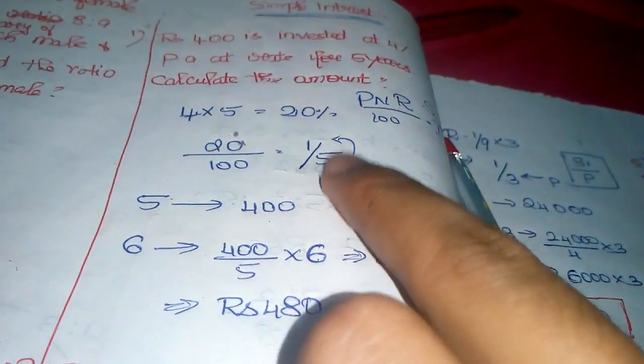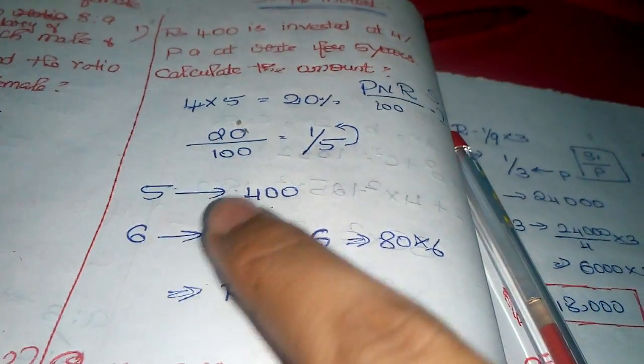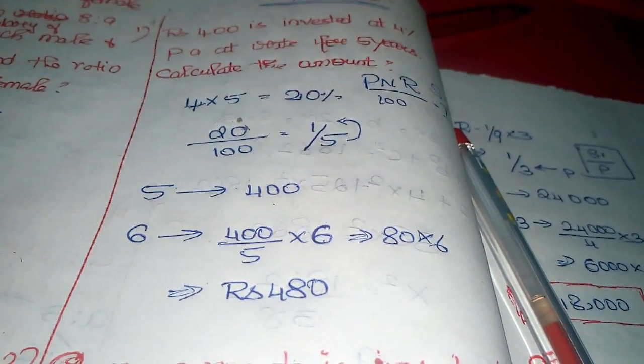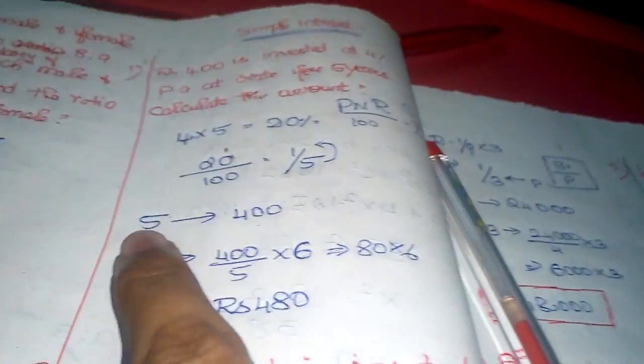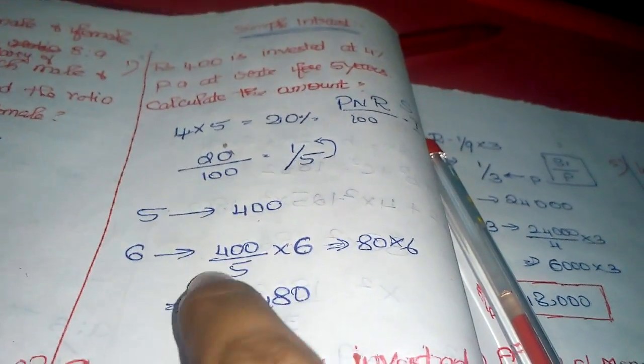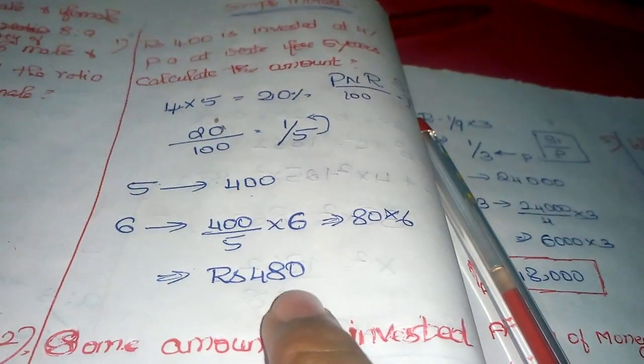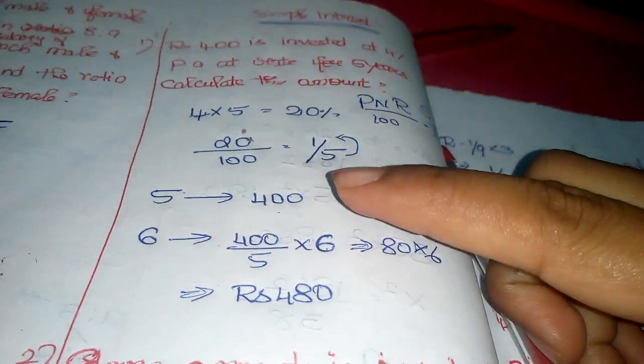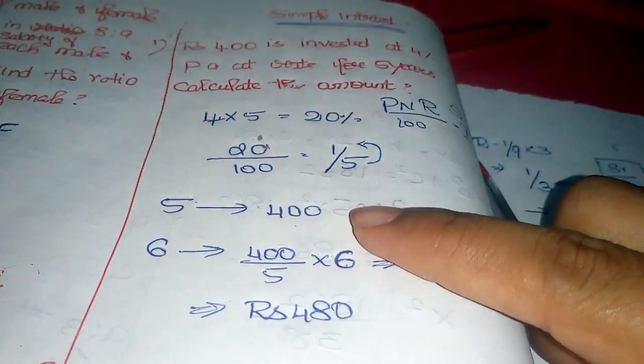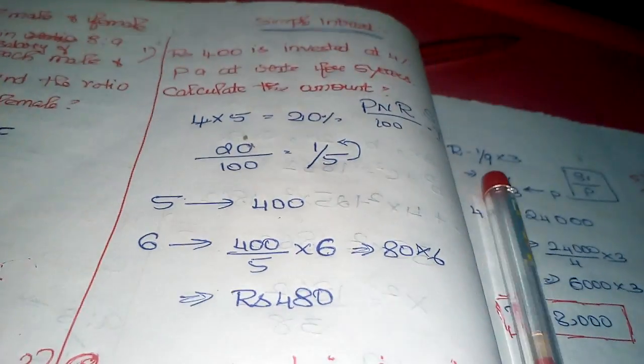Amount is equal to principle plus simple interest: 5 plus 1 equals 6 parts. One part is 80 - if 5 parts equal 400, then 6 parts equal 400 by 5 into 6, which is 480 rupees. This is very important - principle is on the downside, simple interest is next to principle.